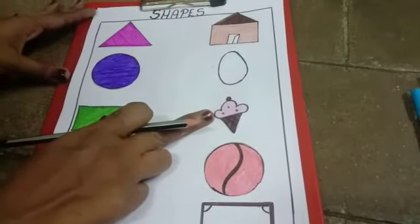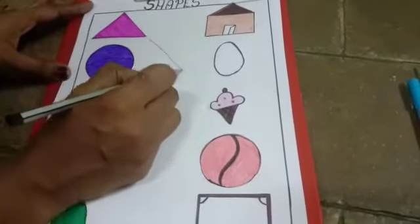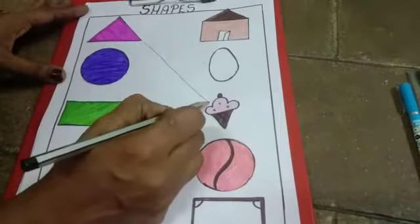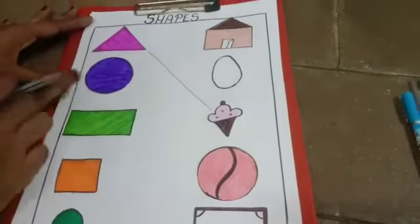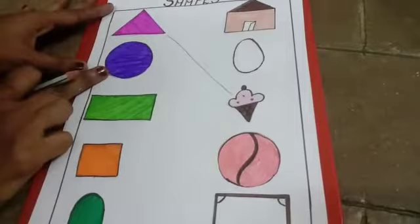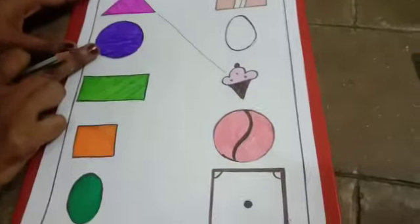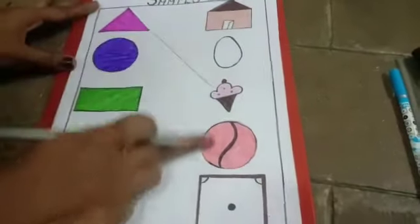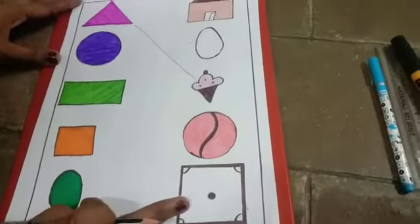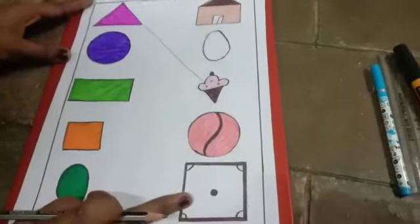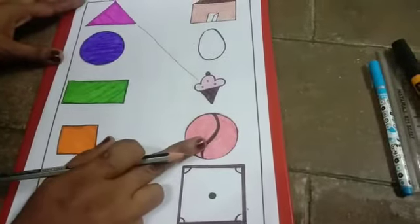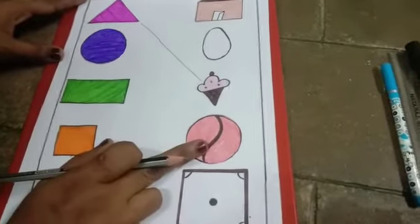This is the circle. Now let's match. Now you tell me which figure looks like a circle. Ball. This ball looks like a circle.